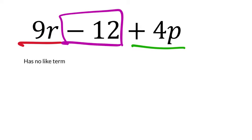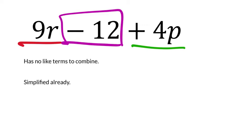For a problem like 9r minus 12 plus 4p — boxing each term: you have 9r, the constant negative 12, and positive 4p. None of these have like terms to combine with, so this expression is already simplified and cannot be simplified further.